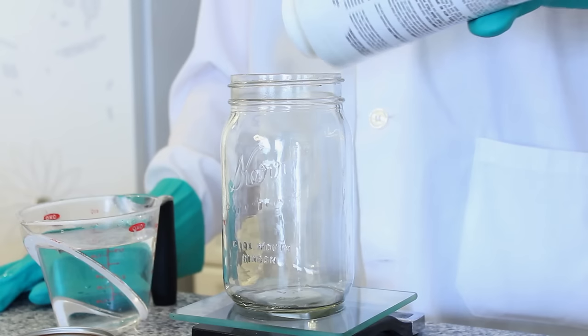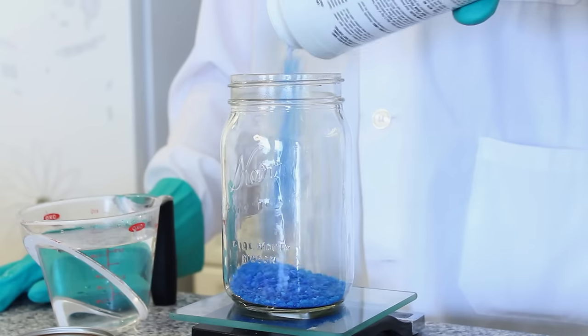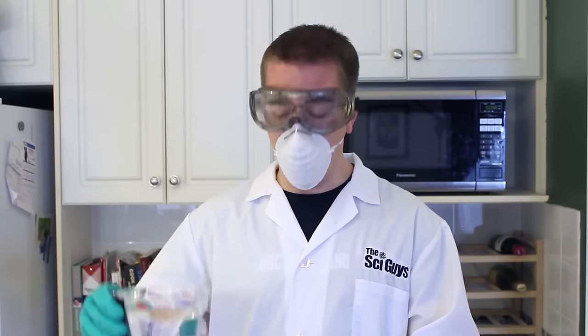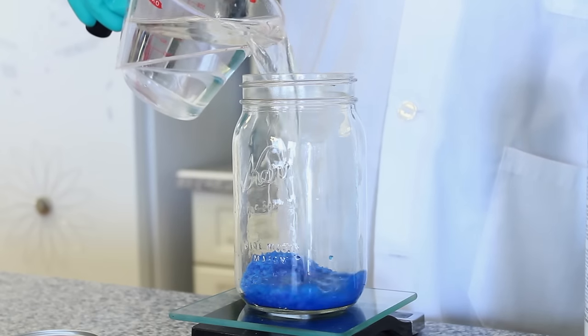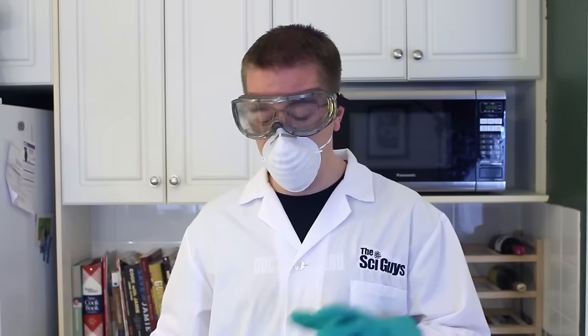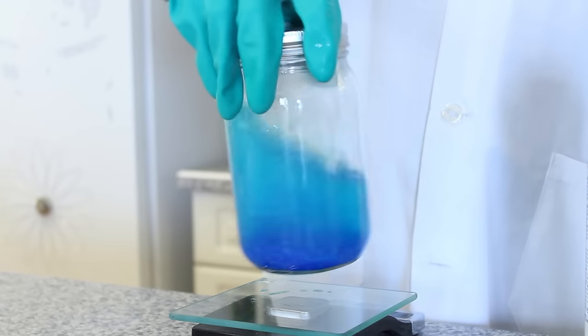The first step in our experiment is to make our copper sulfate solution. Add 100 grams of root killer to your mason jar. Then pour in 2 cups of hot water. Put the lid on the mason jar and give it a gentle swirl until all the crystals are dissolved.